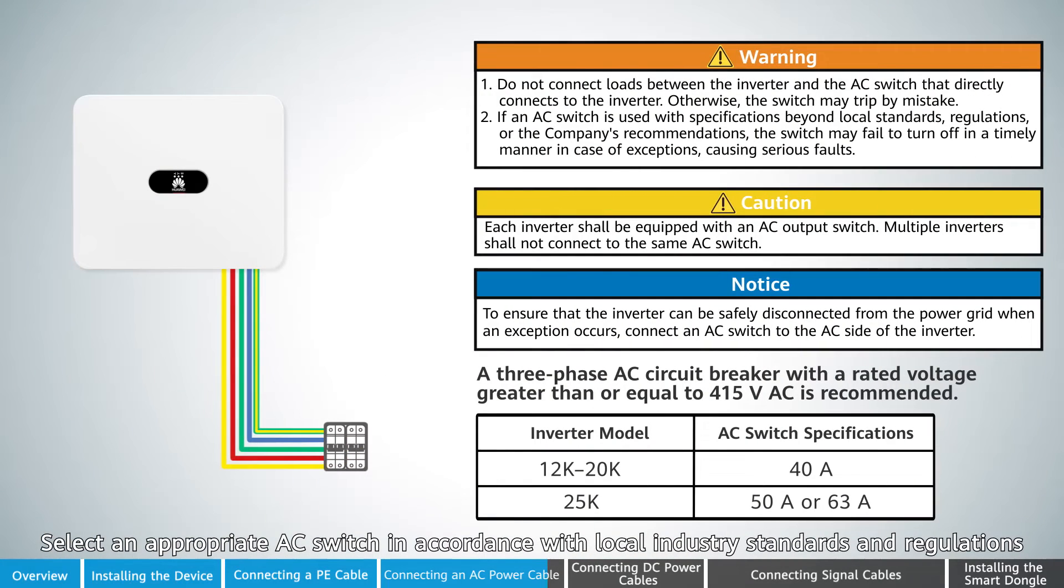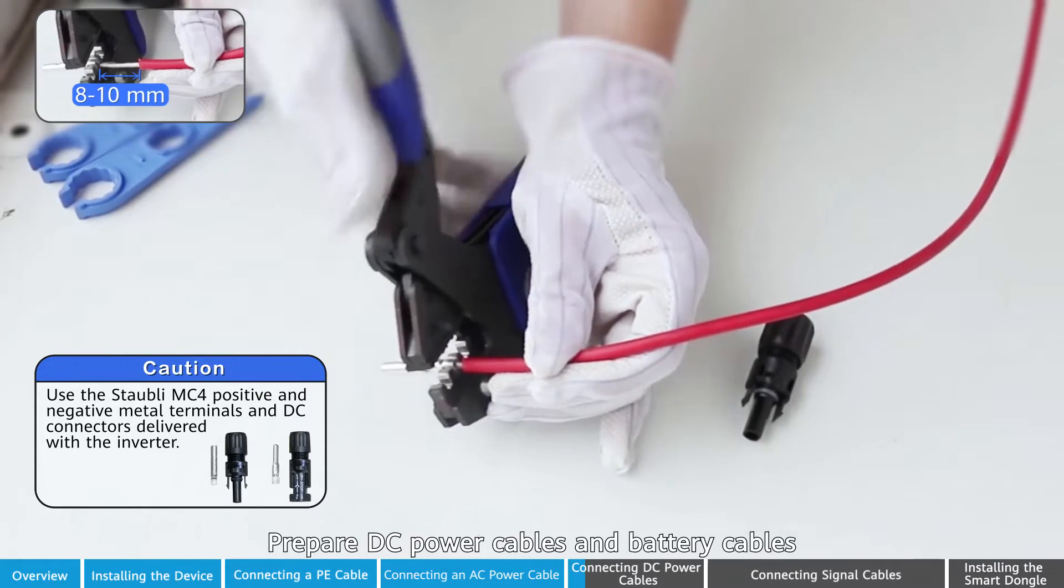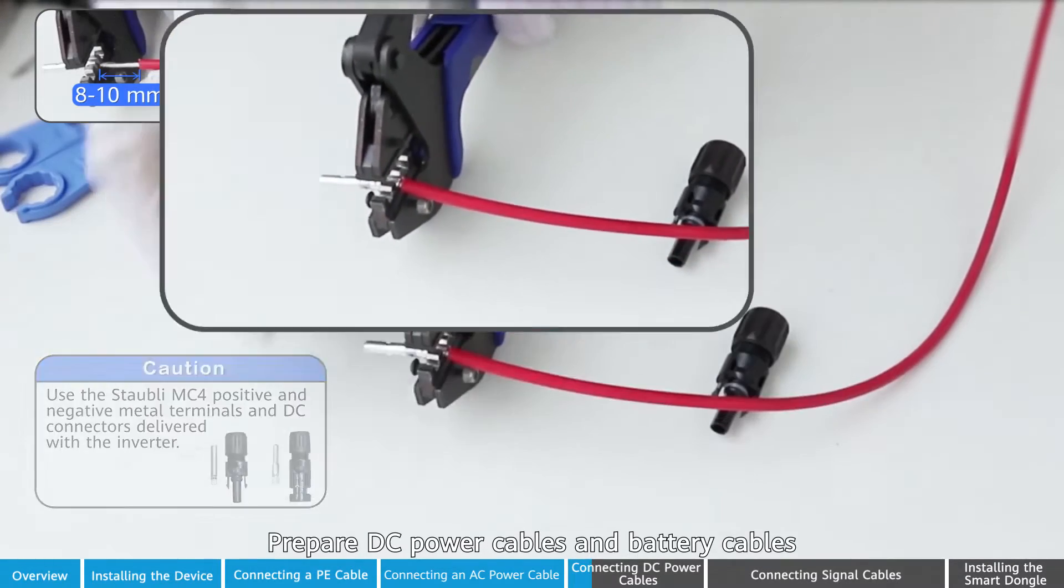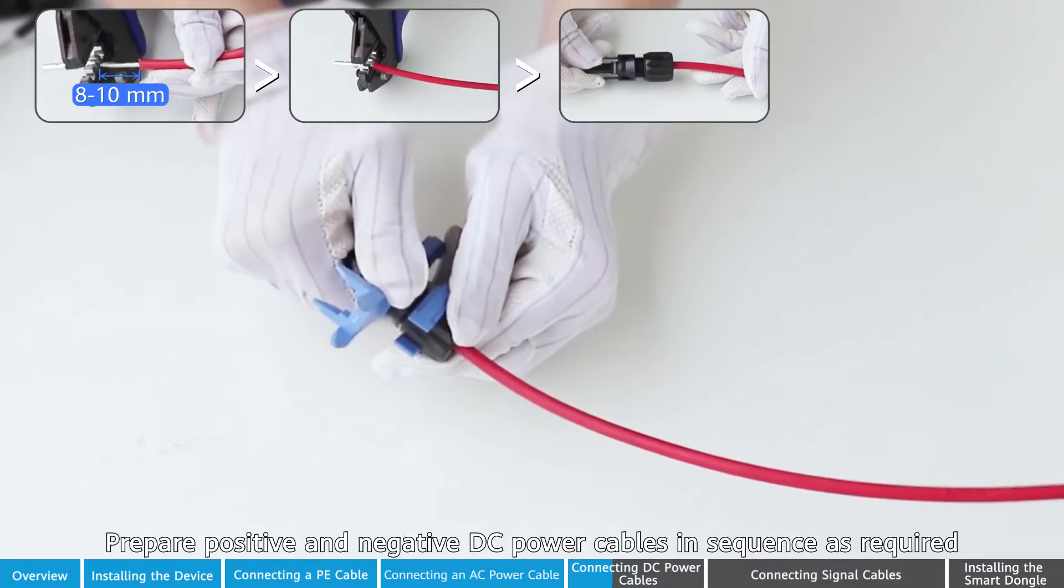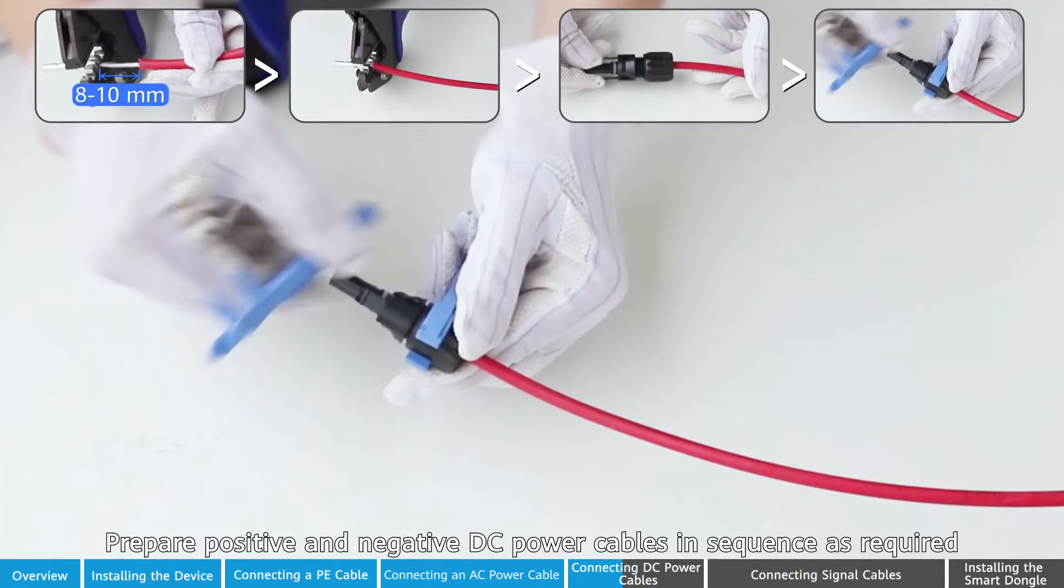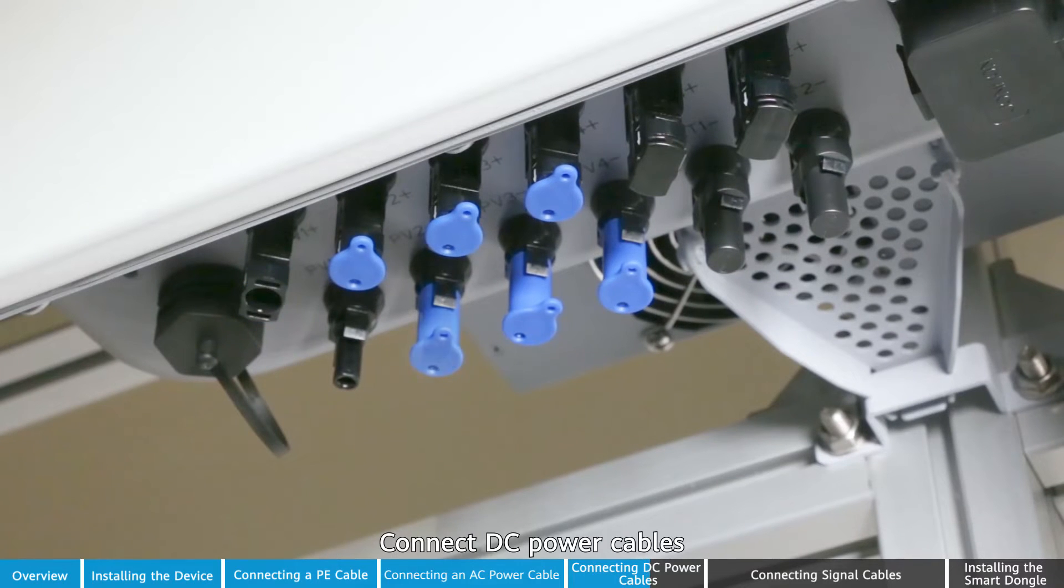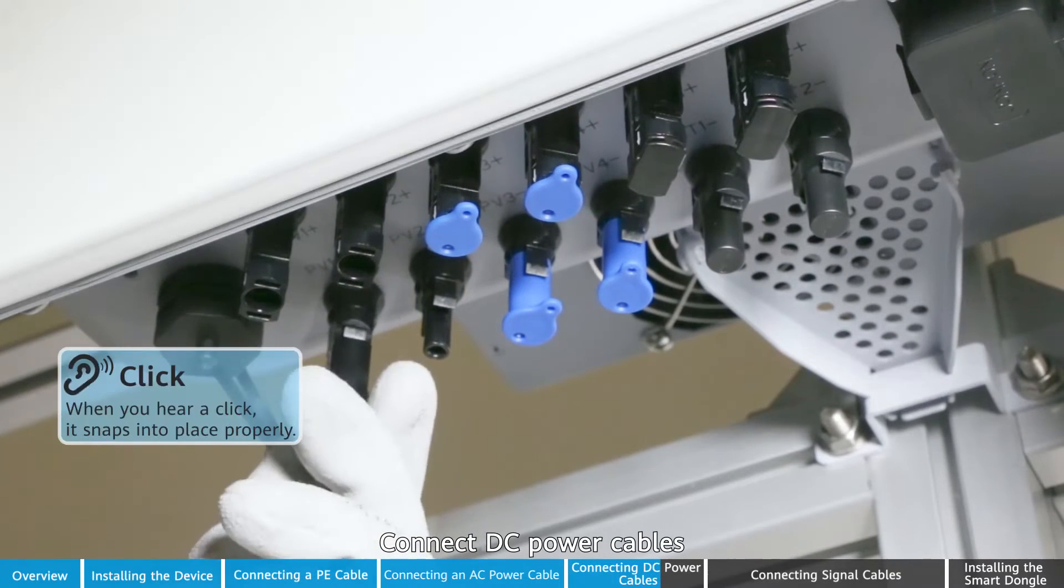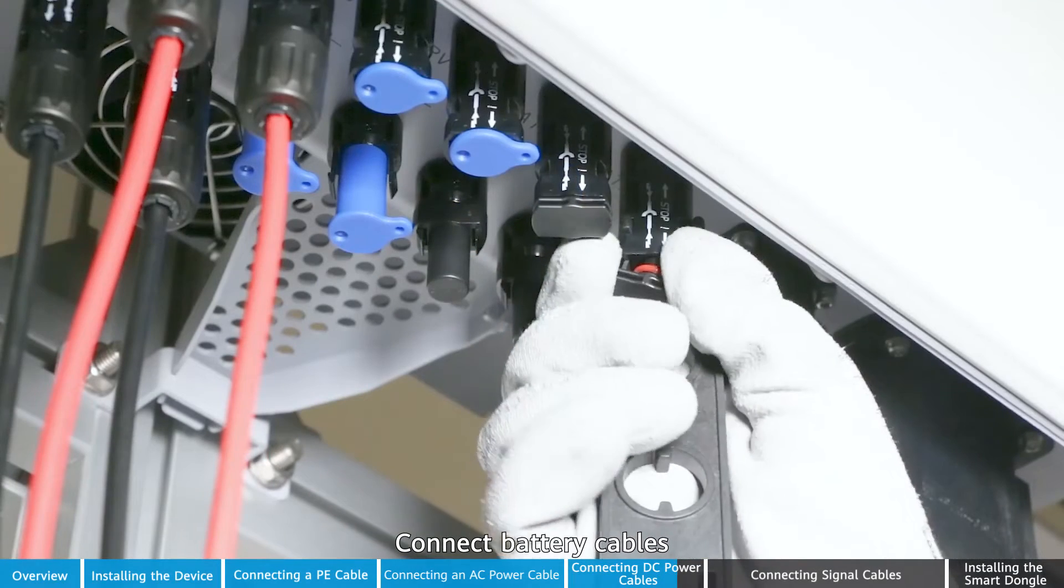Select an appropriate AC switch in accordance with local industry standards and regulations. Prepare DC power cables and battery cables. Prepare positive and negative DC power cables in sequence as required. Use a multimeter to measure the voltage and ensure that the polarities are correct. Connect DC power cables. Connect battery cables.